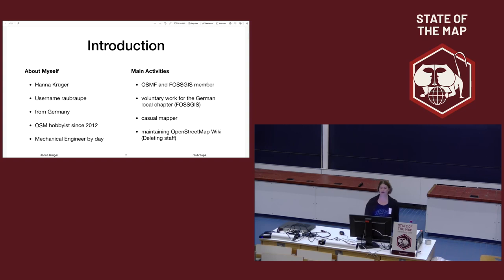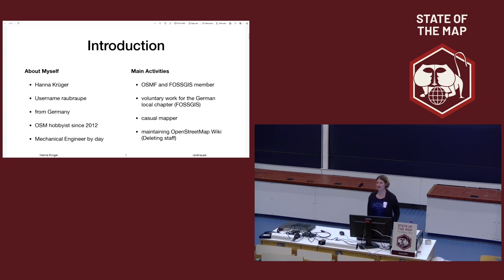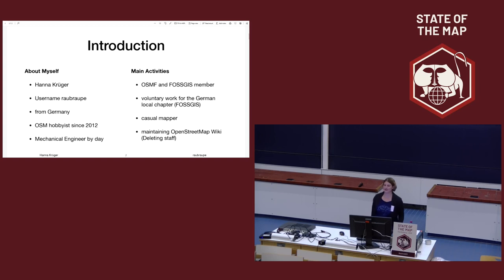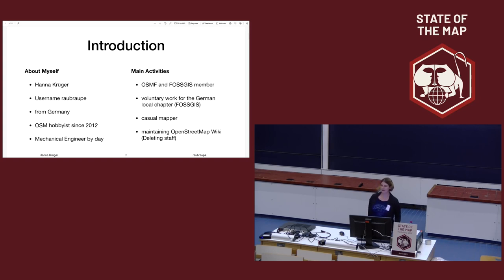I'm from the German community. I started with OpenStreetMap in 2012, and I'm just a hobbyist. In everyday life I'm a mechanical engineer for astrophysics systems, so I'm not really into mapping, just other stuff. What I'm doing in OpenStreetMap as my hobby is I'm a member of OSMF and FOSSGIS, which is the German local chapter, and I'm doing a lot of voluntary work for FOSSGIS. Sometimes I map, but it's not what I'm doing in my everyday life.